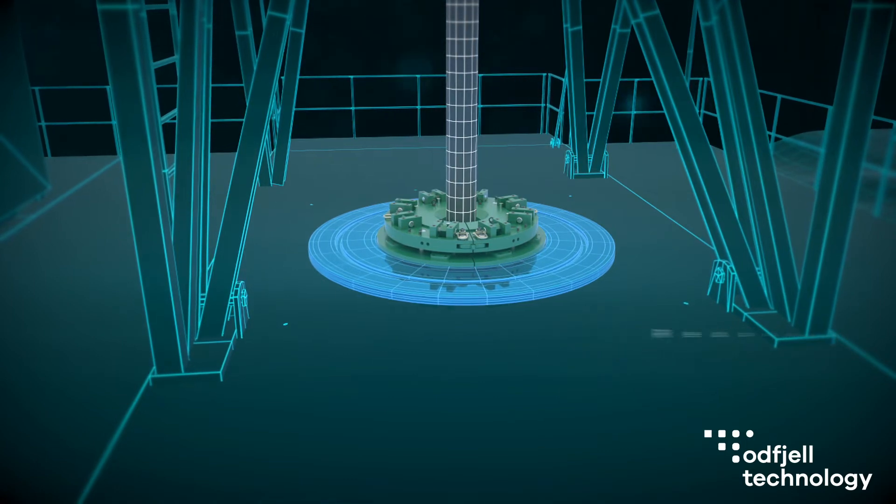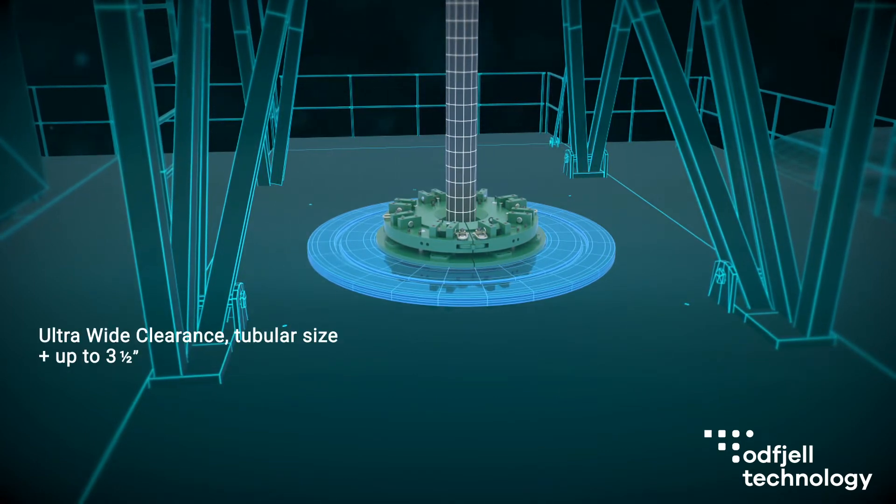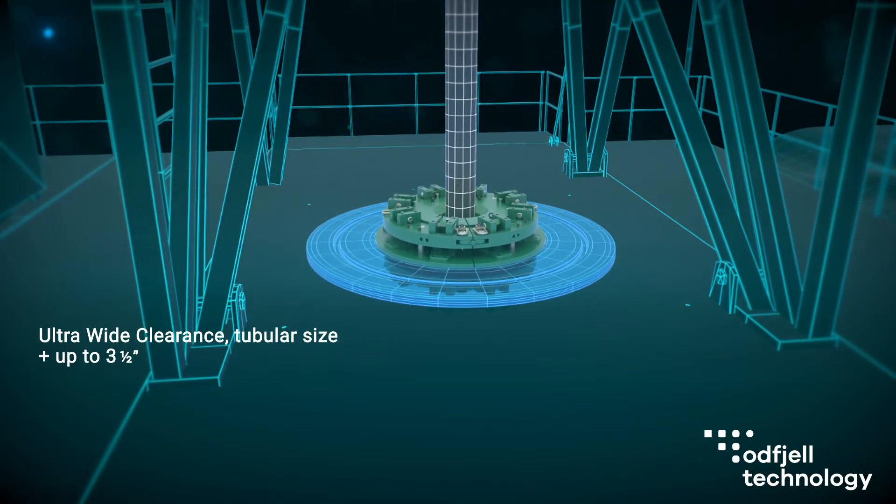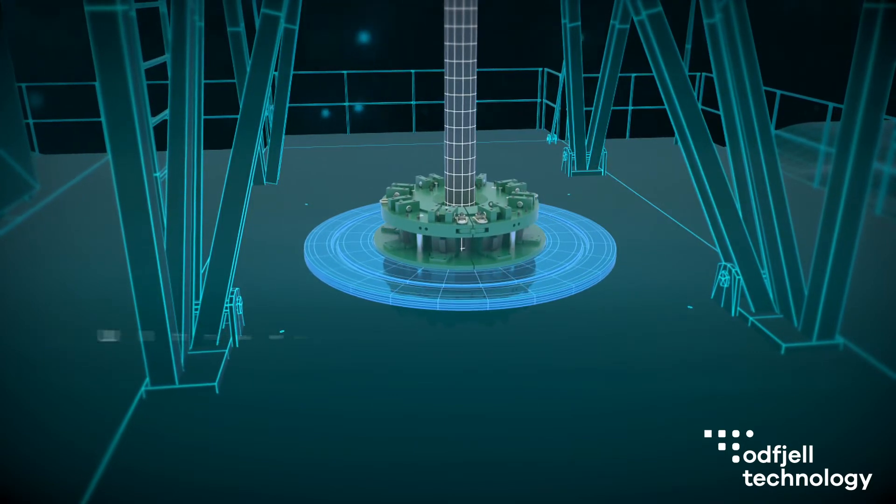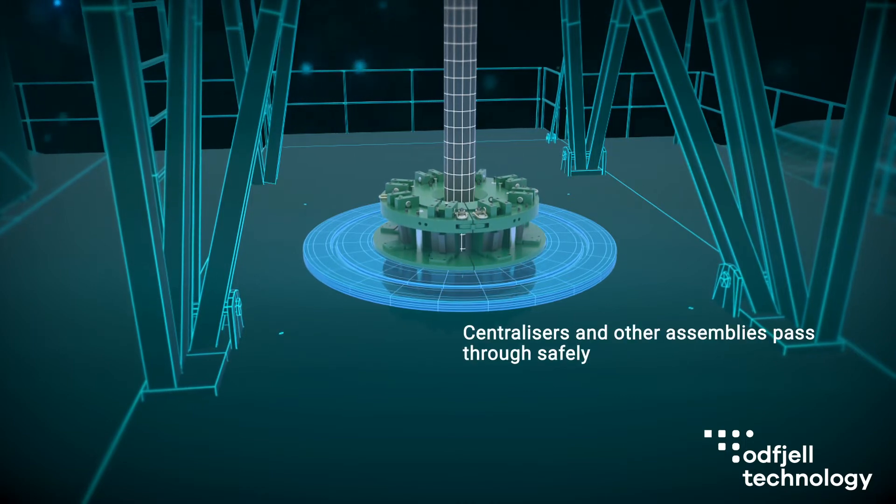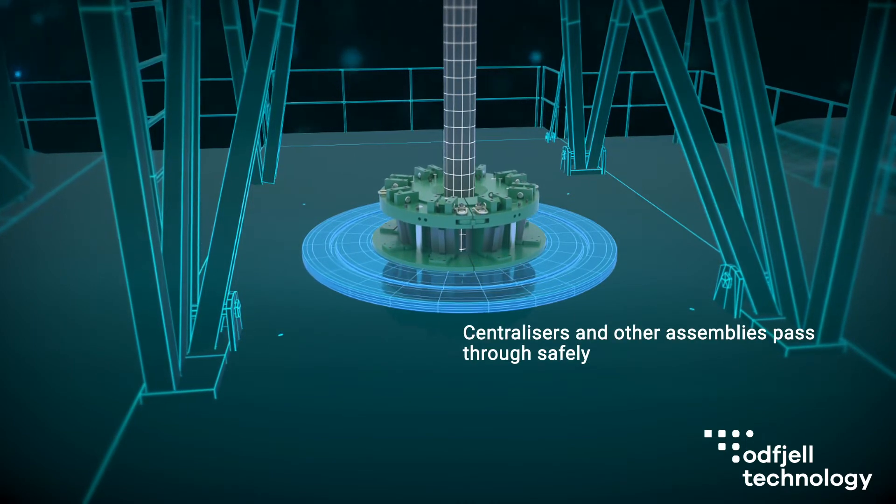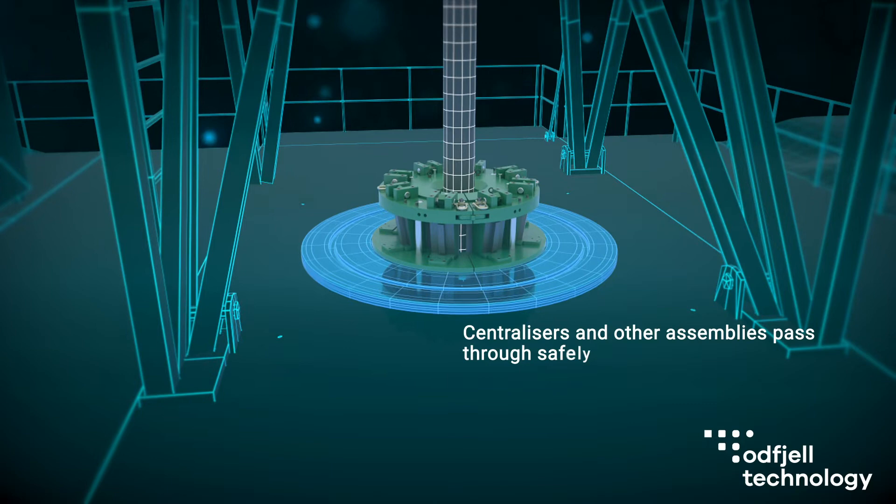Even with the guide plates fitted, the UltraFMS has a massive pass-through clearance of up to 3.5 inches more than the tubular size, enabling centralizers and other downhole components to pass through safely without hanging up.